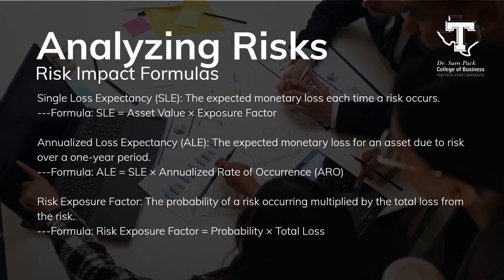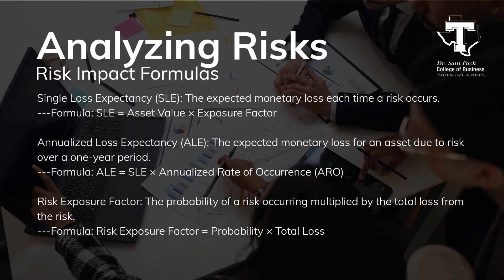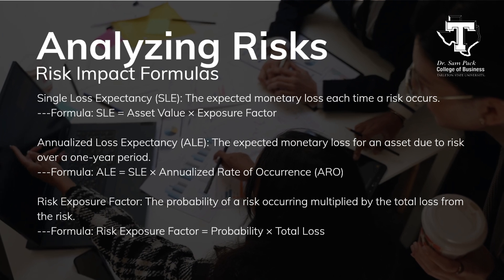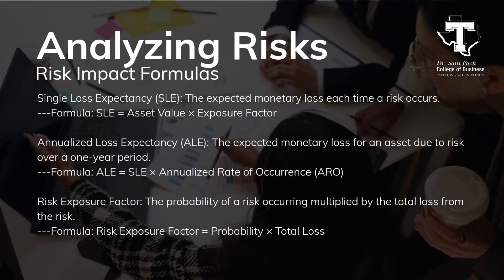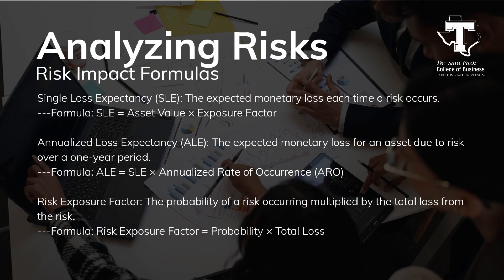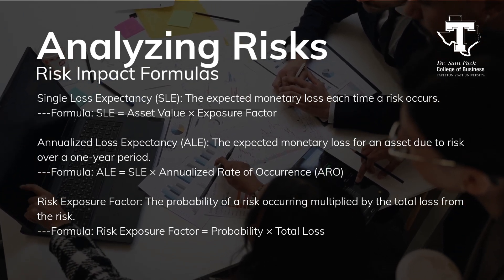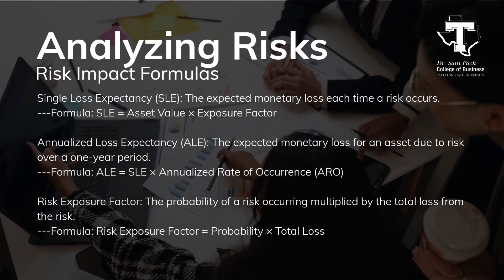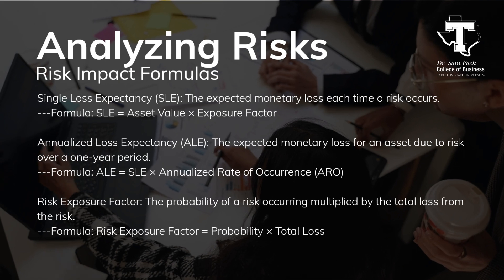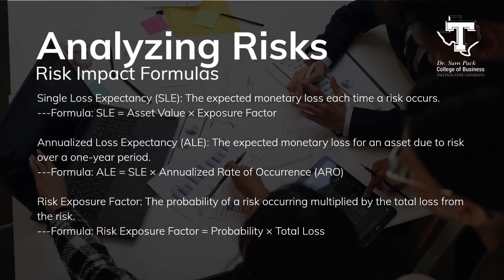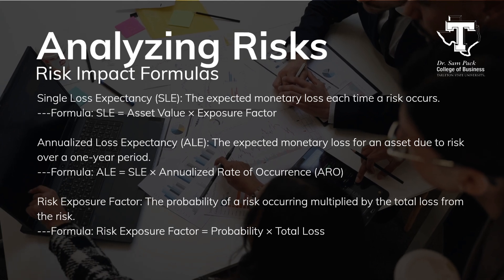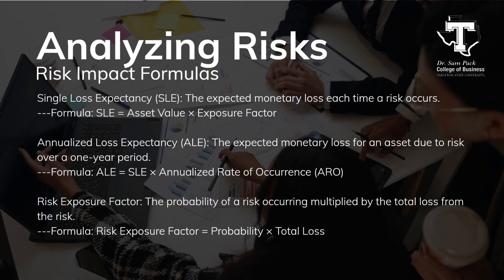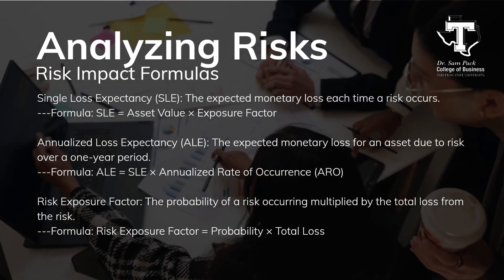Understanding the potential financial impact of risks is essential for effective risk management. We use a few key formulas to estimate potential losses. Single Loss Expectancy (SLE) measures the expected monetary loss each time a risk occurs — a straightforward way to estimate the financial impact of a single event. Annualized Loss Expectancy (ALE) calculates the expected loss over a year by combining the SLE with the likelihood of the risk happening within that year. Risk Exposure Factor is calculated by multiplying the probability of a risk occurring by the total potential loss, helping you understand how likely a risk is to materialize and the financial consequences.